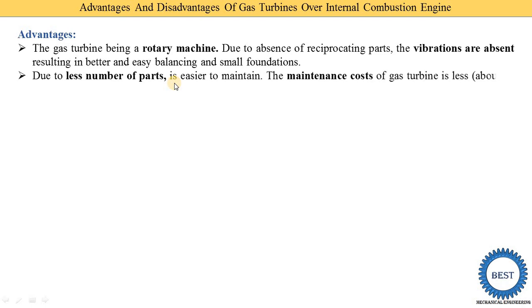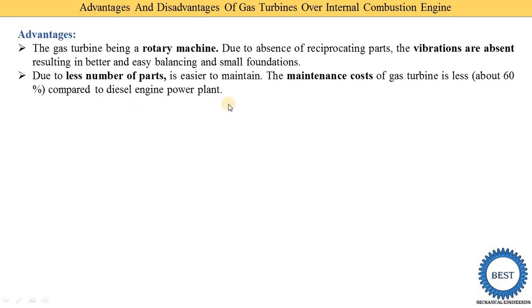The second advantage is that a gas turbine has fewer number of parts, making it easier to maintain. The maintenance cost of a gas turbine power plant is about 60% less compared to a diesel engine power plant. For example, if diesel engine maintenance costs 1 lakh rupees per year, the gas turbine requires only 40,000 rupees.